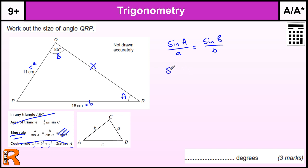Put the numbers in. We get sine of A, which is what I'm trying to find, over 11, equals sine of B, which is 85, over 18.